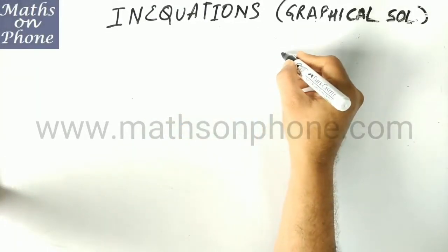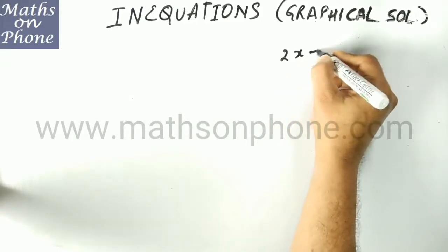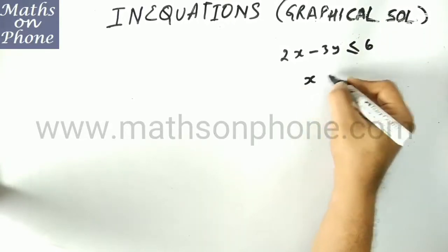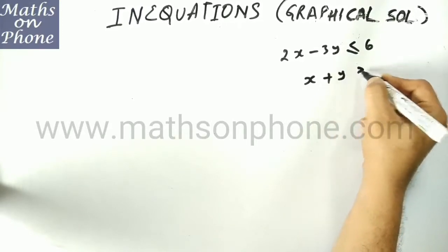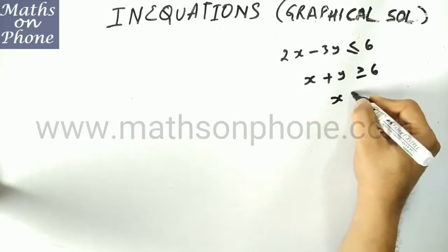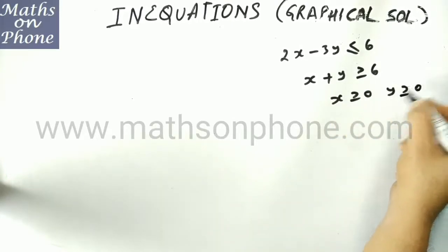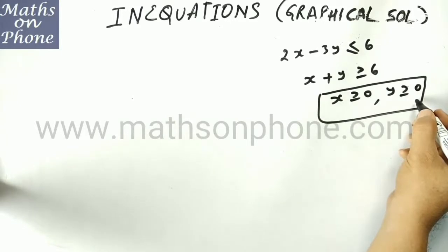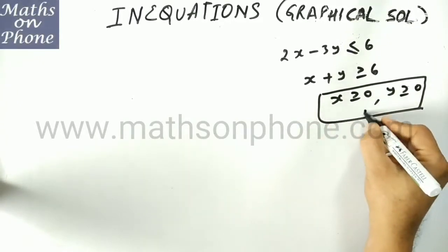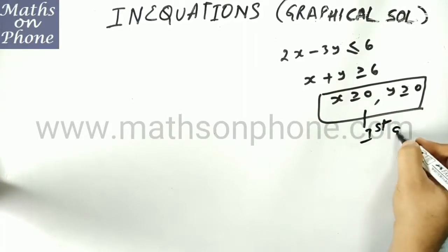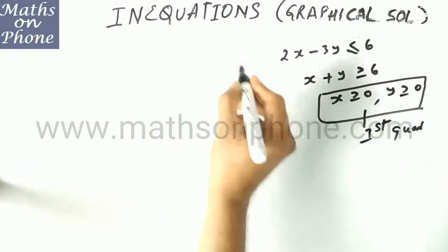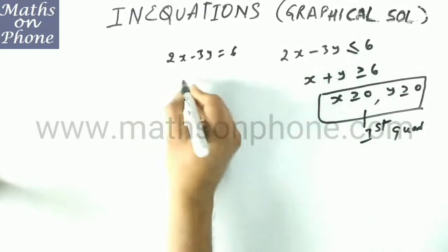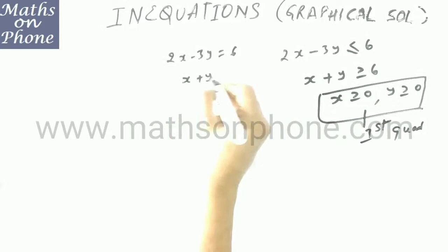One more example: if the inequation is 2x minus 3y less than or equal to 6, x plus y greater than or equal to 6, x greater than or equal to 0, y greater than or equal to 0. Wherever you see x ≥ 0 and y ≥ 0, they are talking about the first quadrant — that means you have to shade the region in the first quadrant only. The corresponding equations will be 2x minus 3y equal to 6 and x plus y equal to 6.